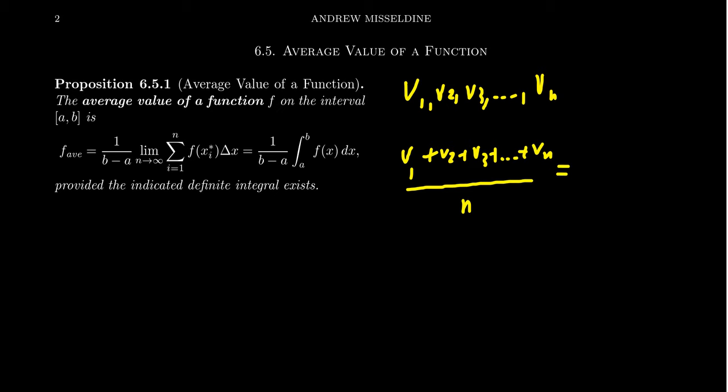In a slightly more compact form, this looks like 1 over n times the sum, as i goes from 1 to n of the vi's. And so this is how one would find the average homework score or the mean homework score. It's a fairly simple idea.